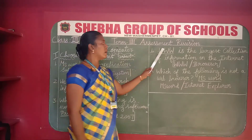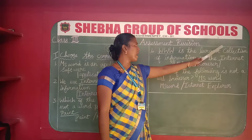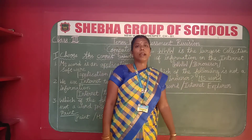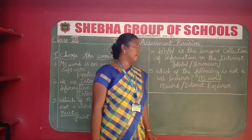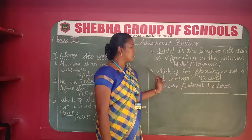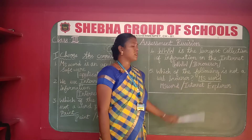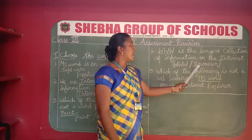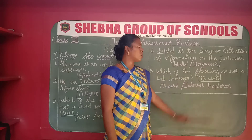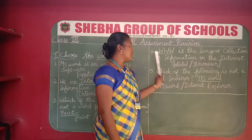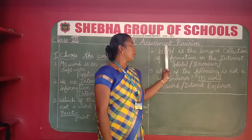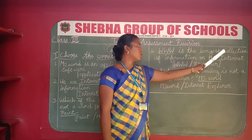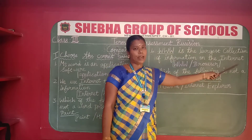Number four: dash is the largest collection of information on the internet. The options are WWW and browser. WWW stands for World Wide Web. World Wide Web is the largest collection of information on the internet. The correct answer is WWW.